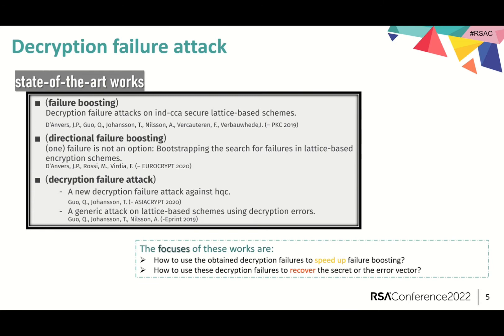In other words, how to use failures to find more failures. The second is to answer another question: how to use these failures to recover the secret or the error vector. As you can see, these works generally focus on the cases after one or more decryption failures have been found. However, there is no way to predict the success or the failure of the decryption besides the length of the ciphertext itself before finding the first decryption failure.